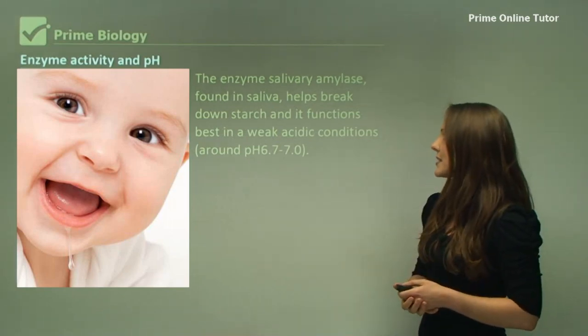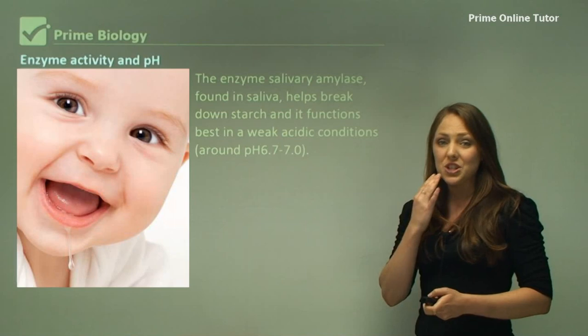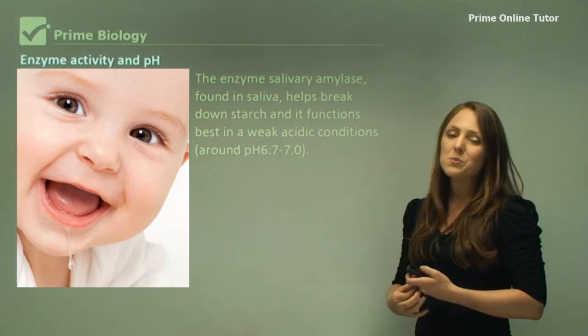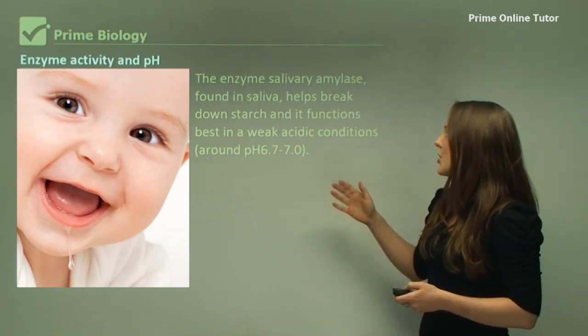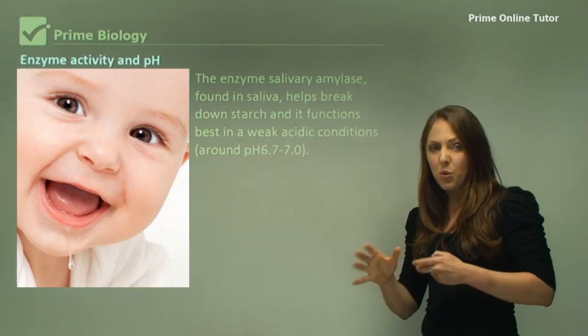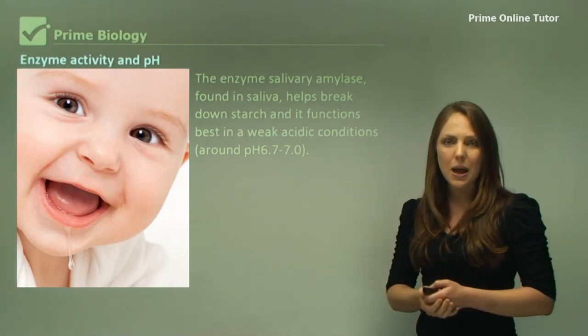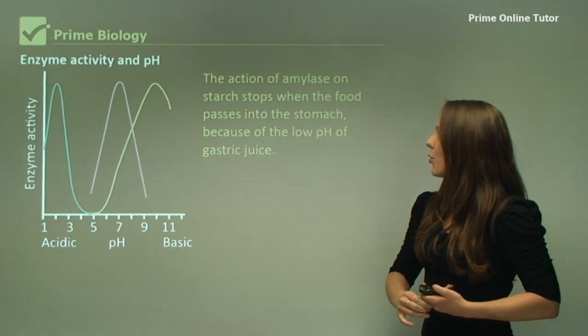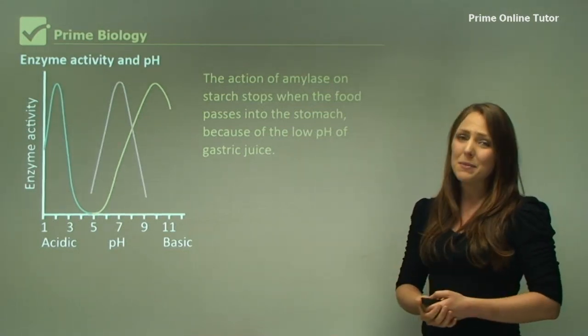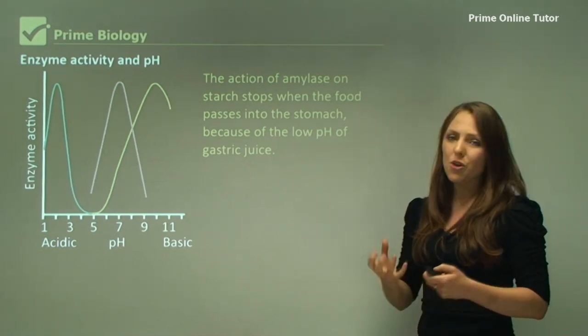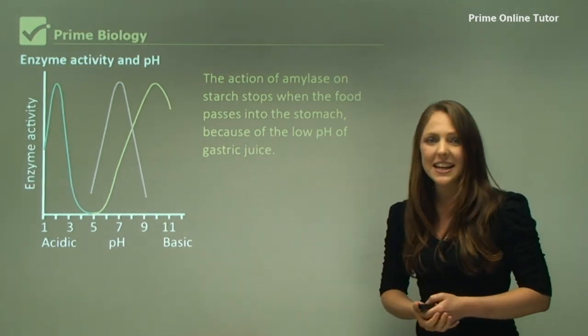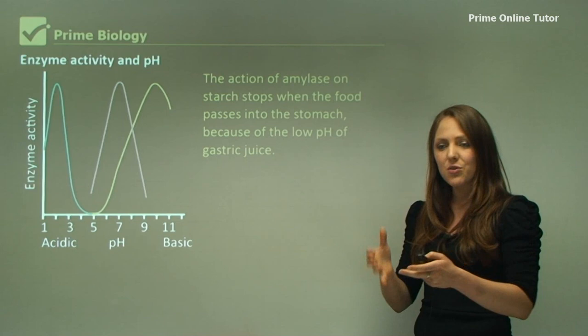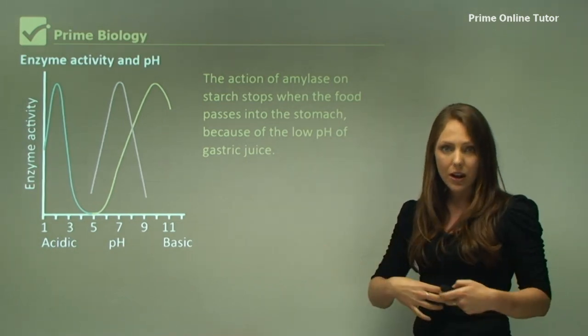The enzyme salivary amylase, which is in your saliva, breaks down starch and functions best in a weak acid condition. So its pH is around 6.7, so that's the weak acid, but it can also range up to pH 7, which is sort of neutral. The action of amylase on starch stops when the food passes into the stomach. This is because the low pH of the gastric juice actually makes it inactive. So the amylase cannot work or perform its function with a pH of 1.5 to 3 as the stomach is.